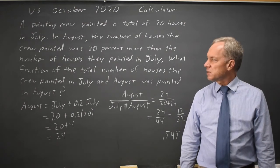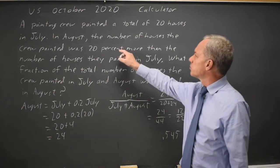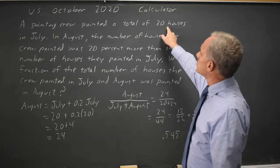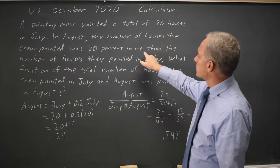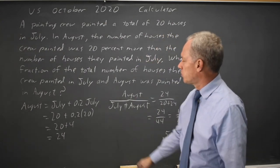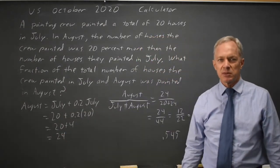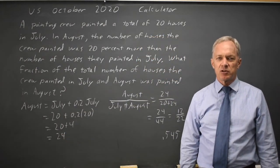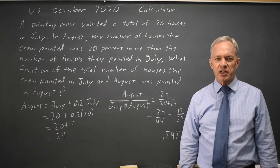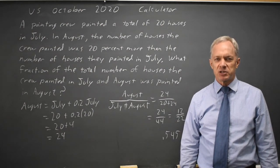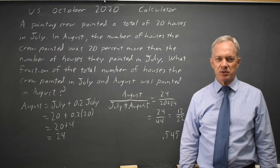So make sure that you can convert expressions like 20% more to .2 times your number plus your original number. And make sure that you can organize this so that you're dividing the correct numbers by the correct numbers. And come back soon for my next SAT video. With math, there's always more.